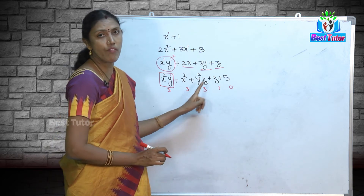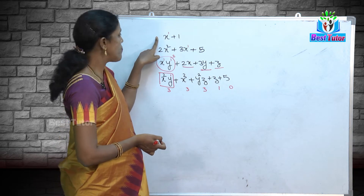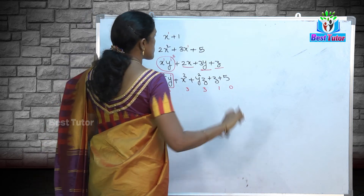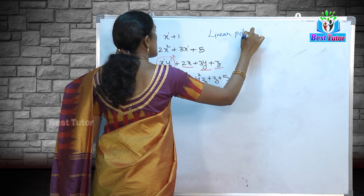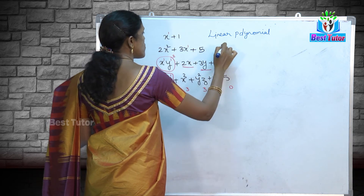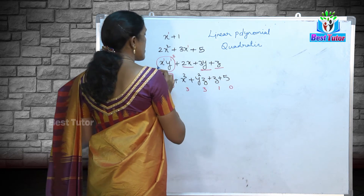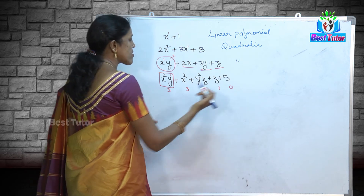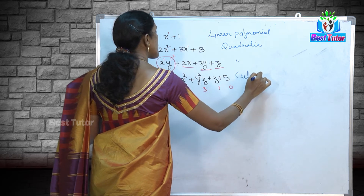We have identified the powers of the terms in each expression. In the first expression, x + 1, the highest power of the variable is 1. Such an expression is called a linear polynomial. In the second expression, the highest power is 2 — it is called a quadratic polynomial. In the third expression, the highest power is also 2 — it is also a quadratic polynomial. In the fourth expression, x³ + y²z + z + 5, the highest power is 3, so it is called a cubic polynomial.